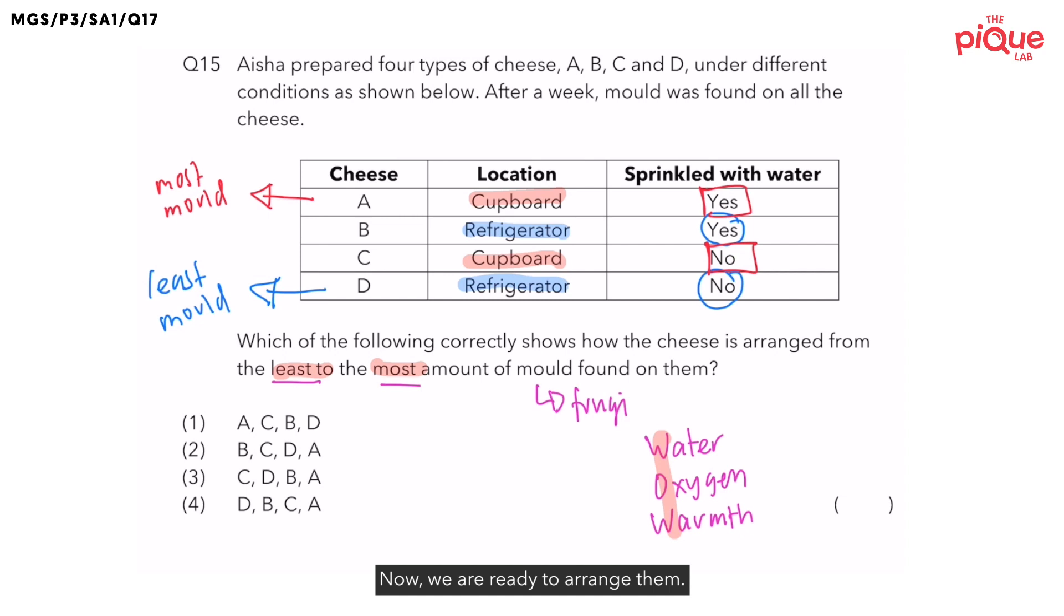Now, we are ready to arrange them. Recall that the question asks you to arrange from the least mold to most mold. And we already say that cheese D would have the least mold and cheese A would have the most mold. Therefore, the answer should be option number four.